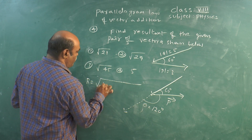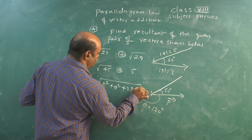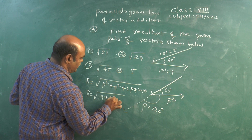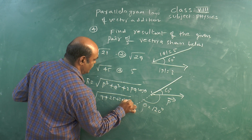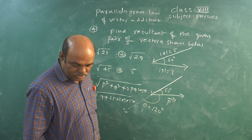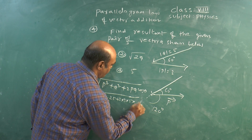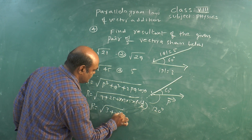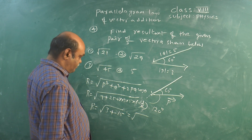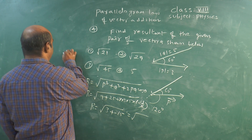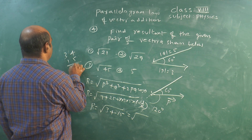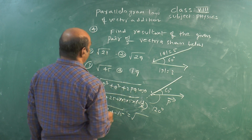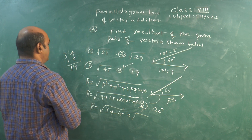Using the formula R equals square root of P squared plus Q squared plus 2PQ cos theta: P squared is 9, Q squared is 25, and 2 into 3 into 5 into cos 120 equals 30 into minus one-half equals minus 15. So R equals square root of 9 plus 25 minus 15 equals square root of 19, approximately. The answer works out and the correct option is identified. Thank you.